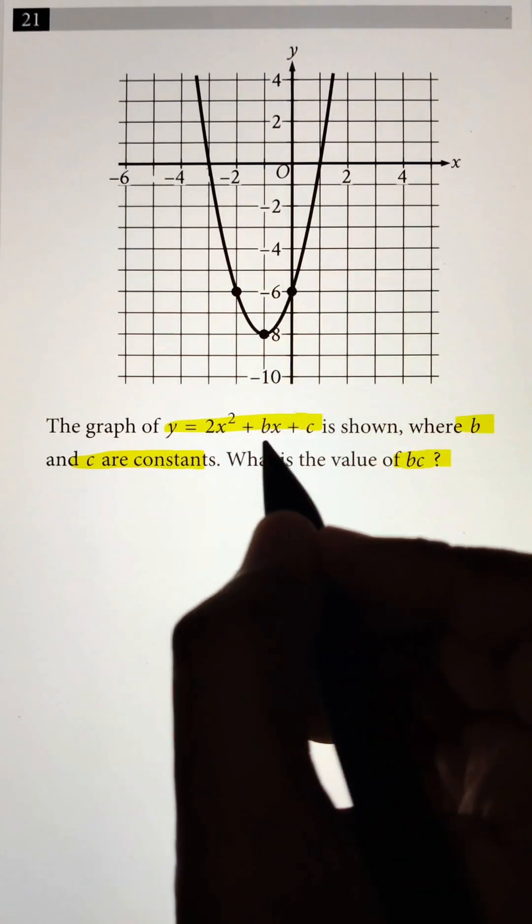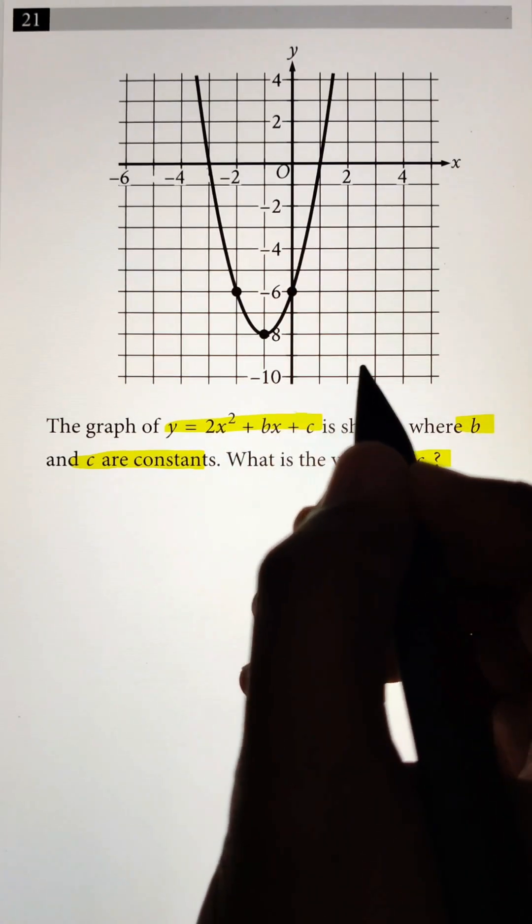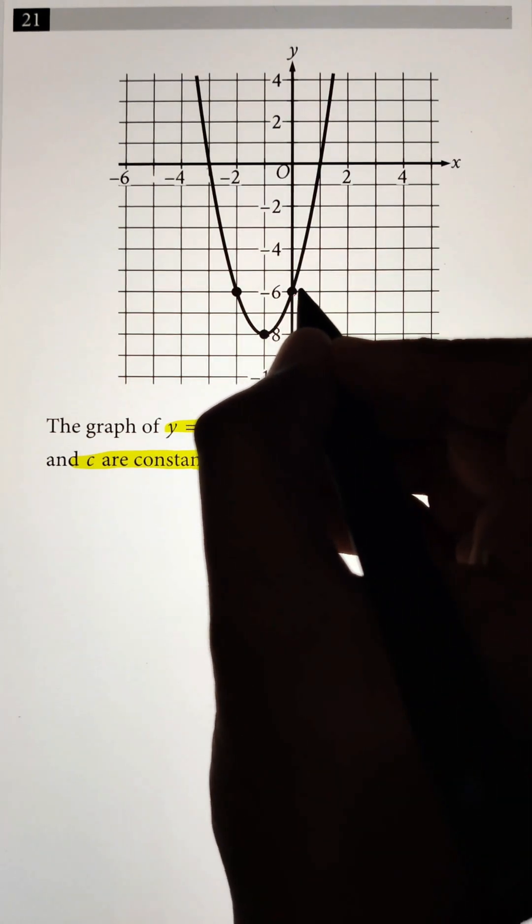Now, there are various points that you can plug in, but the easiest way will be to pick a point that has one of the coordinates equals to zero. So we'll look at the points on the x-axis itself. Let's look at this one.